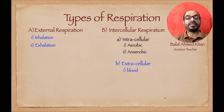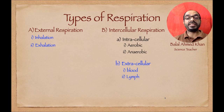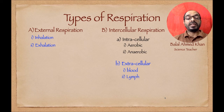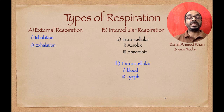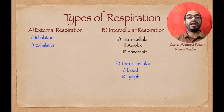Blood acts as a transporter, carrying oxygen and carbon dioxide during inhalation and exhalation. The second extracellular medium is lymph. Lymph is an intercellular fluid through which exchange of gases occurs. When blood transfers oxygen, it first transfers it to the lymph, and then the cell receives oxygen from the lymph. Similarly, cells release carbon dioxide first to the lymph, and blood receives it from the lymph. In this way, lymph acts as a medium for gas exchange.